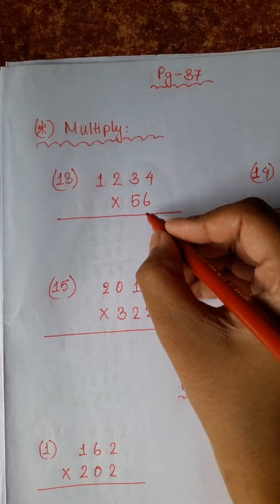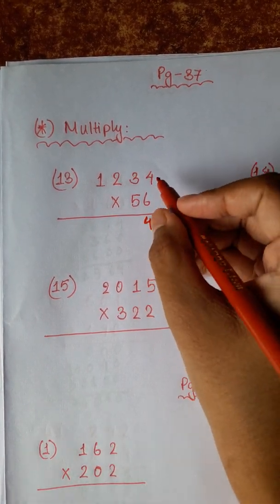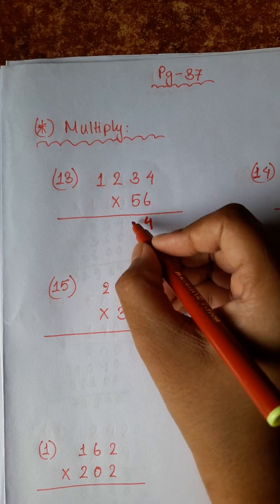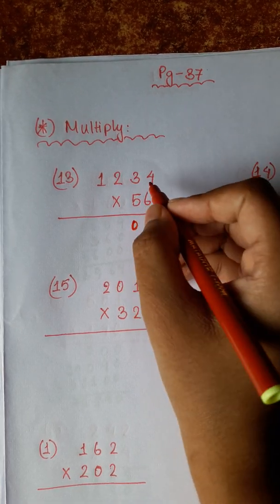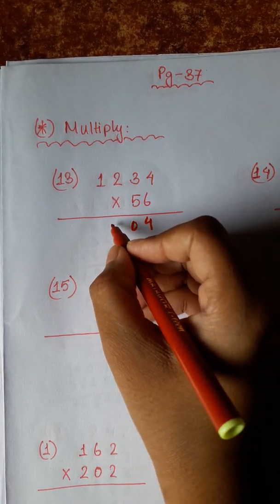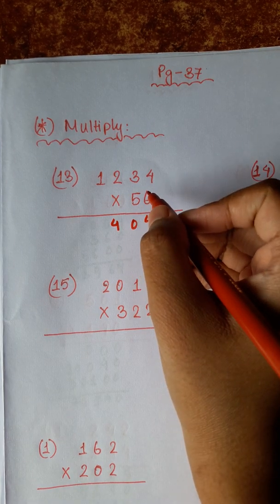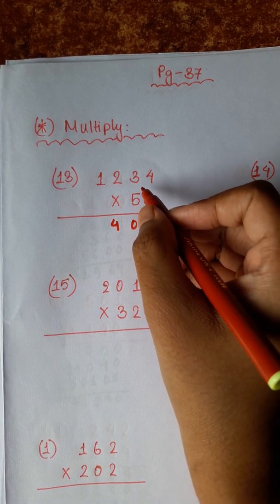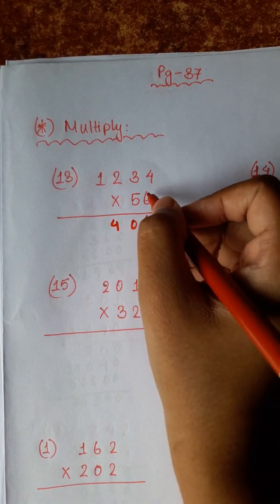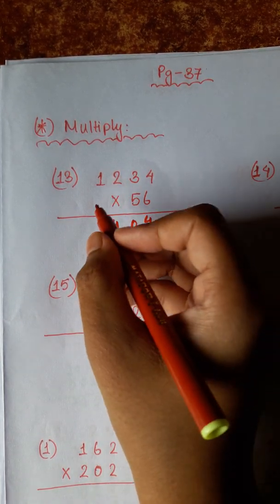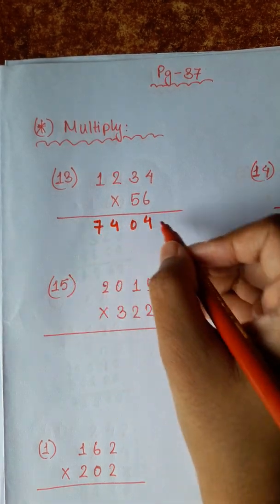6 fours are 24. 2, 6 threes are 18 plus 2 is 20. 2, 6 twos are 12 plus 2 is 14, carry 1. 6 ones are 6 plus 1 is 7.